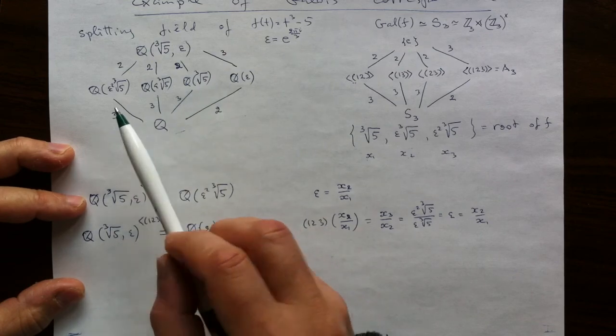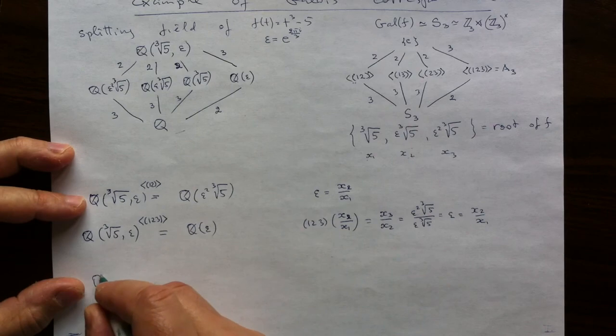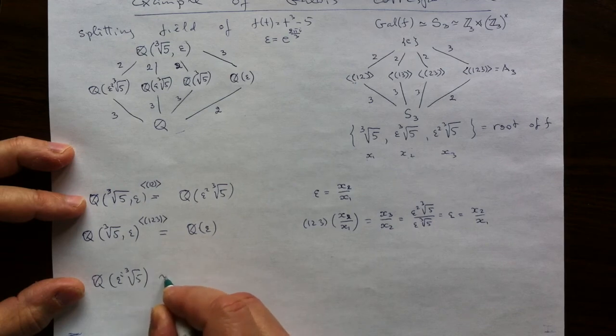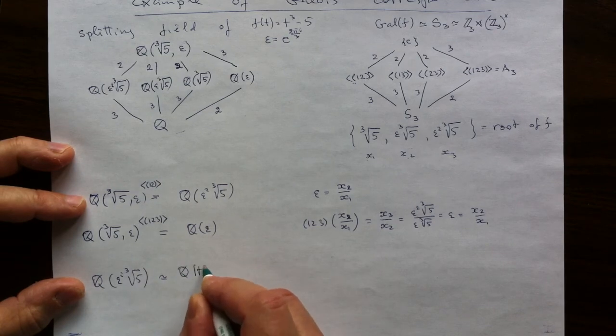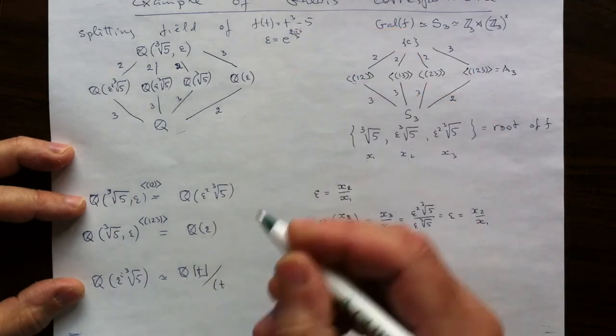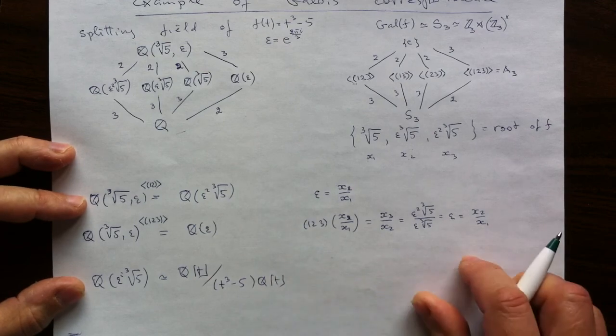Because it's an abstract field. They are all isomorphic. They are all quotients. So all of them, doesn't matter what the power of epsilon is in this number, all of them are isomorphic to the same quotient of the polynomial ring by the minimal polynomial t cubed minus 5 by the polynomial which we split.